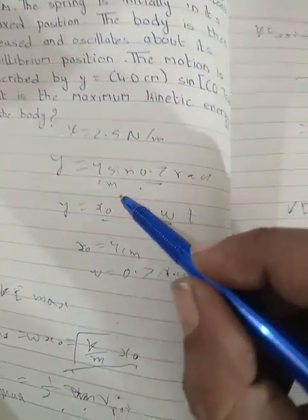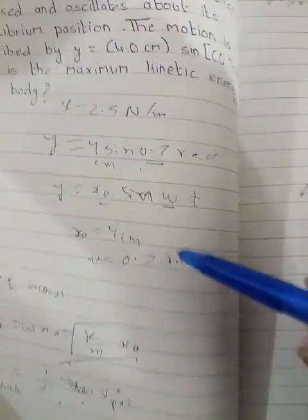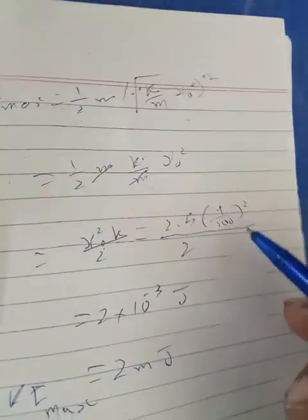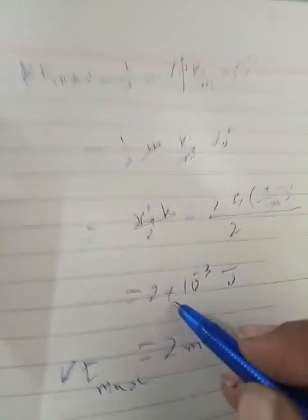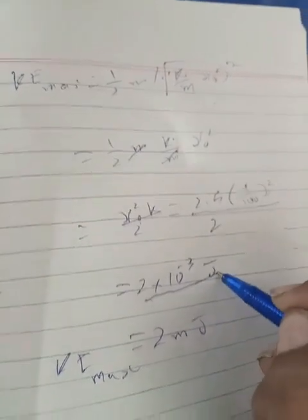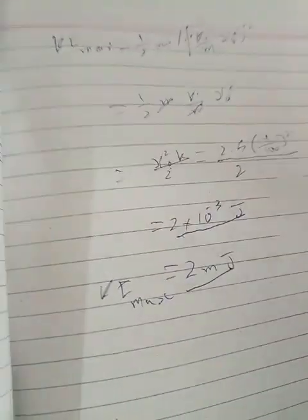Putting the x-naught value and k value: k equals 2.5, x-naught equals 4 cm which is 4 upon 100 meters. The answer comes out to 2 times 10 to the minus 3 Joules.